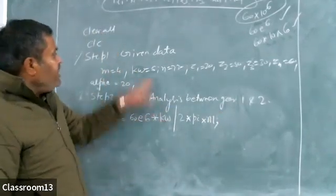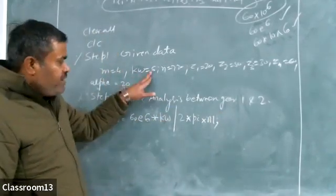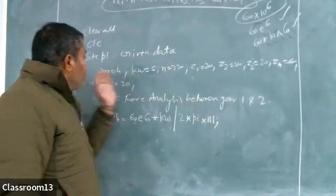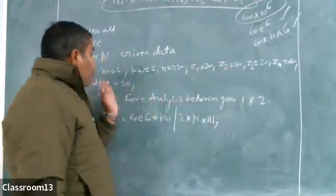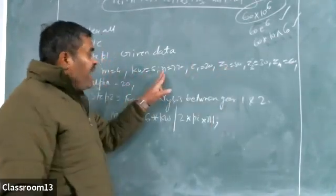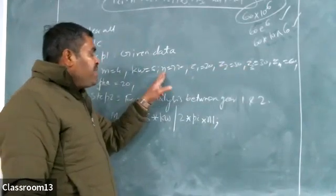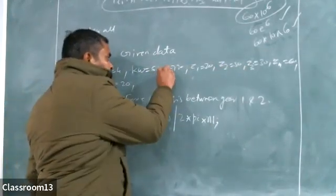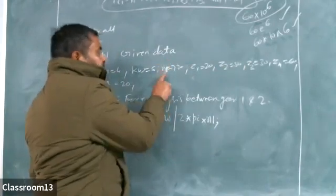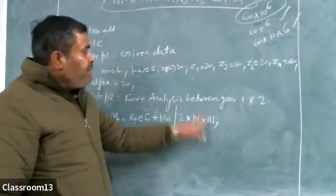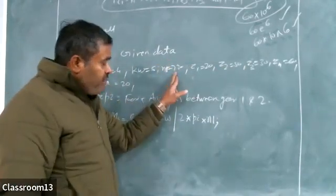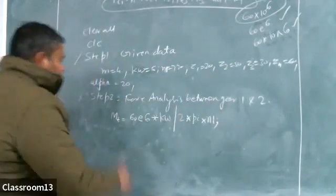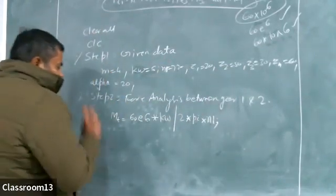Kilowatt has already been defined, no problem. Pi is a constant. N1 is defined here as 720. So N1 will be picked from here. There will be no problem with the calculation of torque. The Nt part is over. After finding Nt, we can find the tangential force.